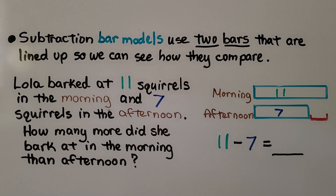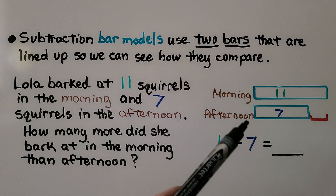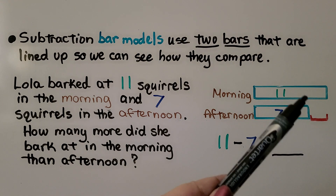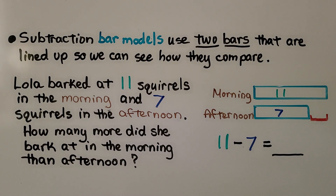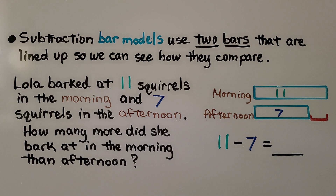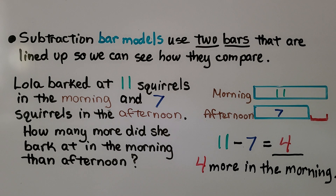Subtraction bar models use two bars lined up so we can compare them and see how much longer or shorter one bar is than the other — that difference is shown with a bracket. Lola barked at 11 squirrels in the morning and 7 squirrels in the afternoon. How many more did she bark at in the morning? Morning is 11, afternoon is 7. Do you know what 11 minus 7 equals? If you said 4, you're right — she barked at 4 more in the morning.